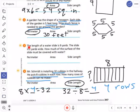There we go. Here we go. So for number three, the length of a water slide is nine yards. The slide is two yards wide. How much of the surface of the slide must be covered with water? So the length of the water slide is nine yards, the slide is two yards wide. How much of the surface of the slide must be covered with water?